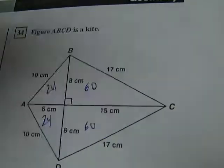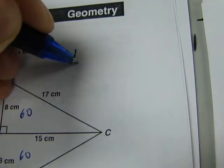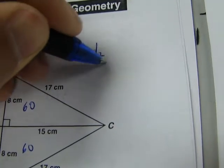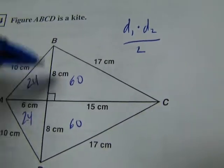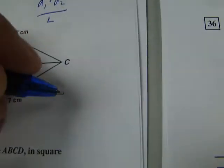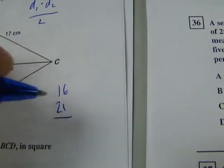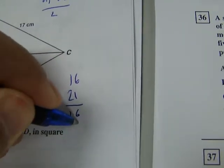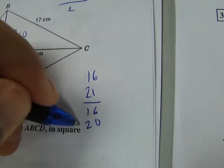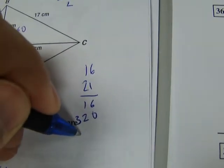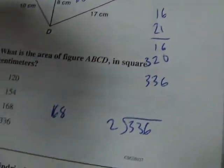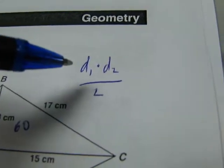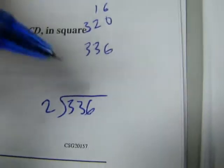The other way to do it is you can actually use the kite formula, which is going to be diagonal 1 times diagonal 2 divided by 2. That works just as well. This diagonal here has a length of 16. This has a length of 21. So 16 times 21 is 336. 336 divided by 2 because, remember, divide by 2. So 336 divided by 2.